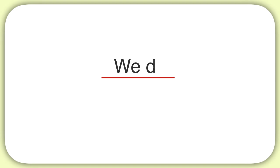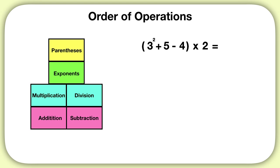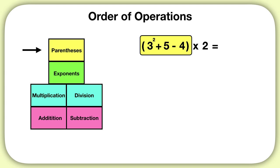Now let's practice one of these together. Let's solve this equation using the order of operations. I can look for parentheses and see them right here. But inside of these parentheses, what should I solve first? Remember, inside of parentheses we follow the same order of operations as the full equation. We see an exponent, an addition, and a subtraction. Exponents come first in our order of operations, so first we will solve three squared, which equals nine.